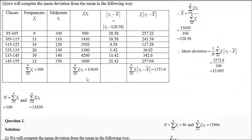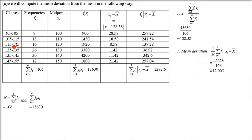The next sub-part is also an NCERT question. The procedure is the same: find midpoints by adding lower and upper limits and dividing by 2 for all classes.